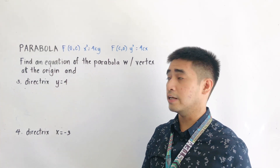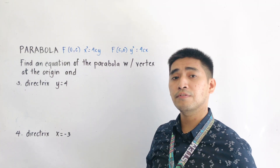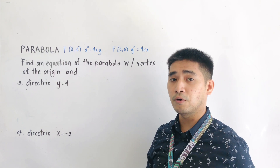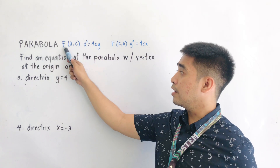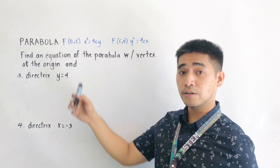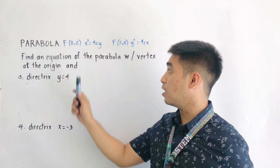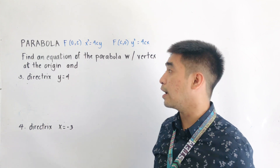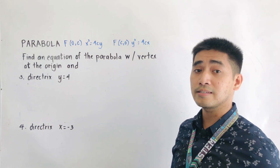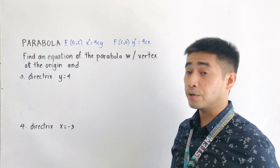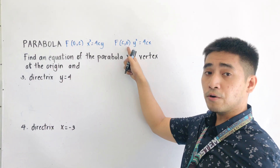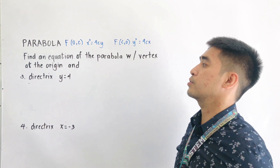We have theorem 1 and theorem 2. For theorem 1, if the focus is located at (0, c) and the vertex at the origin, therefore the x value is 0, so it becomes x squared is equal to 4cy. And for theorem 2, we have the focus located at (c, 0), therefore y squared is equal to 4cx because the y-coordinate is 0 for the focus.